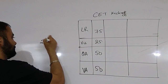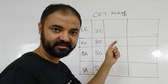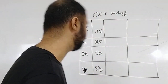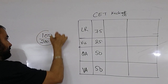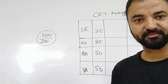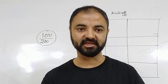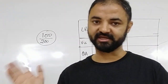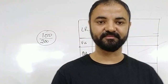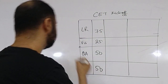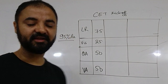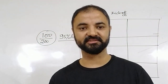It's a 200-mark paper: 75 Logic, 25 Visual, 50 Quant, and 50 Verbal. So if this seems easy, scoring 100 marks is not the main problem. But if you leave the mass, still you can go to JBIMS.